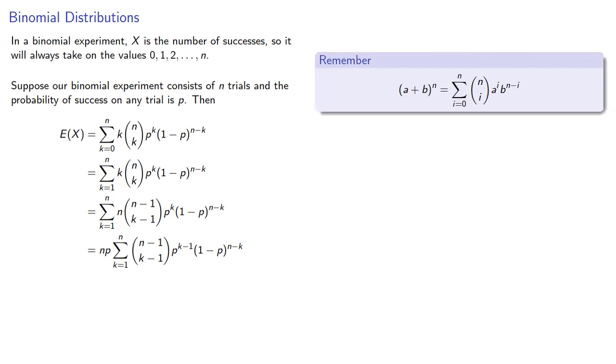So remember that binomial expansion tells us that (a + b) to the nth can be rewritten as a sum of binomial coefficients times a product. And the power in our expansion is the sum of the exponents on the two factors. So if we find the n minus first power of p plus 1 minus p, we get...